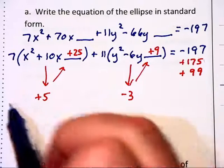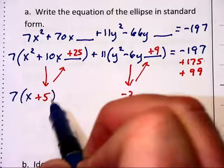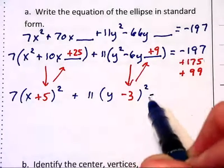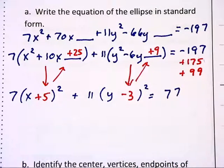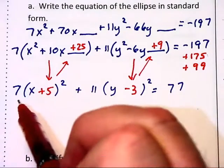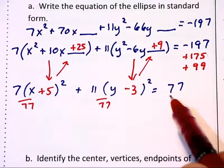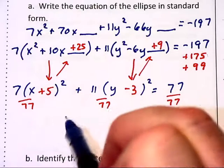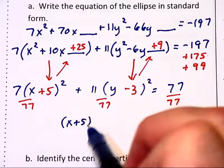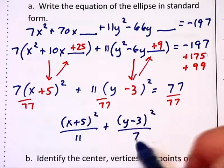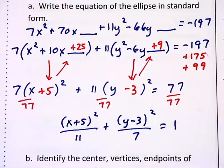So what we have here is 7(x + 5)² + 11(y - 3)² = 77. Now for the ellipse we don't want equals 77. We want equals 1. So we will divide through by 77 on both sides of the equation. And this will give us what we're looking for. (x + 5)²/11 + (y - 3)²/7 = 1. That is our curve in standard form.